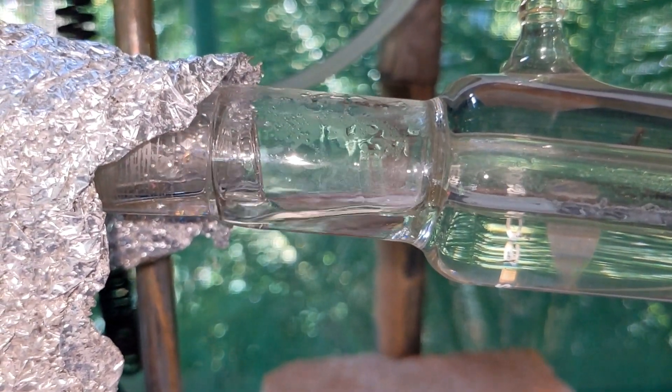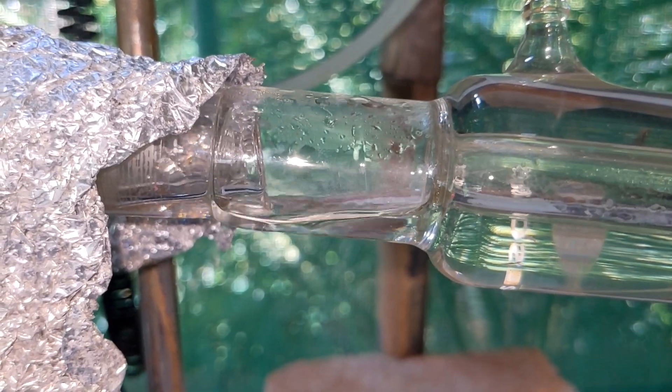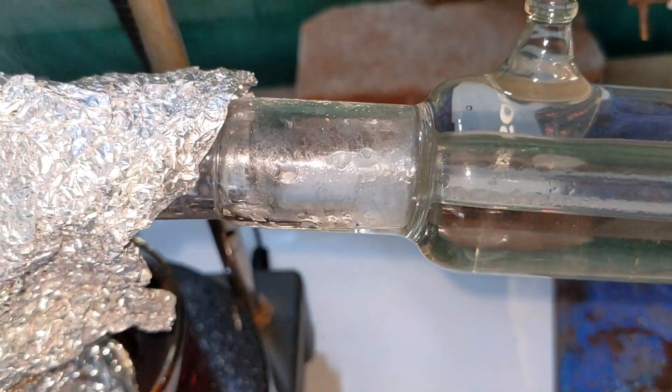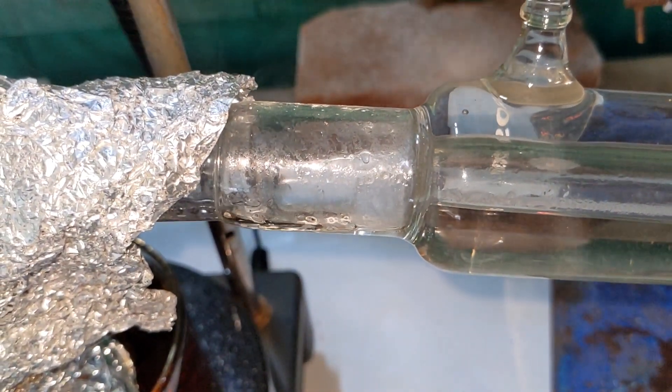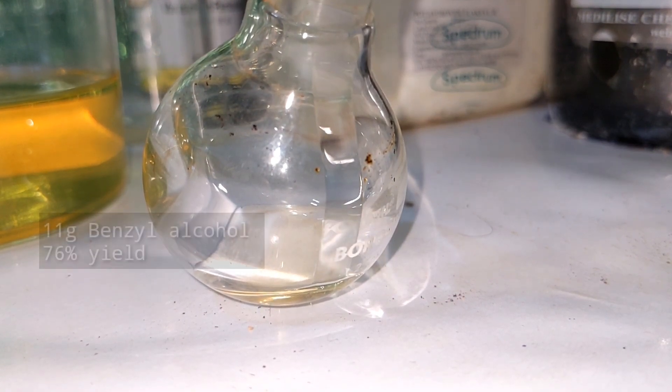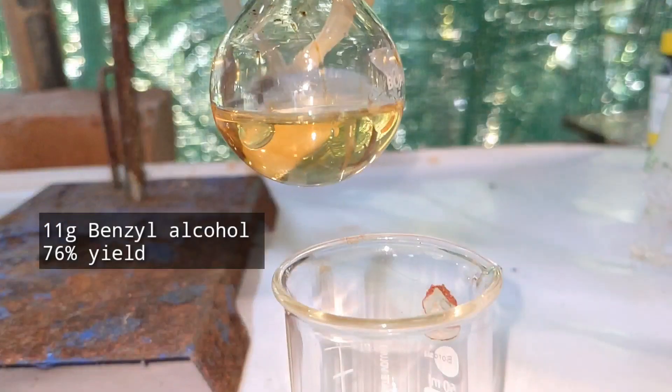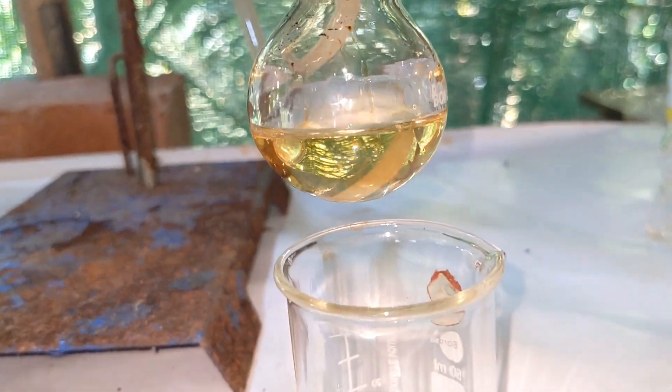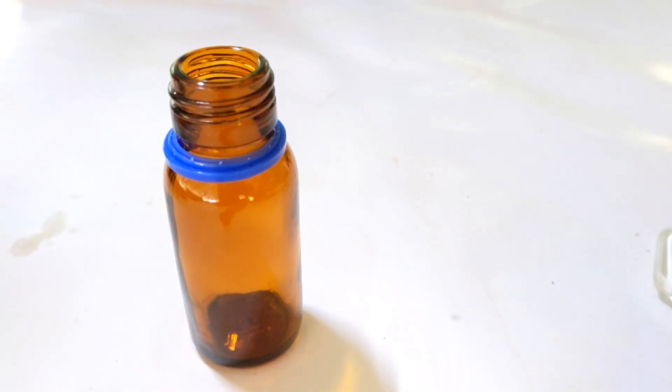Unfortunately my receiving flask contains some organic dye stain and the liquid attained a faint yellow color in the receiving flask. But that is not going to be an issue for me. I obtained 11 grams of benzyl alcohol which represents 76% yield. Then I poured it into an amber glass bottle for storage.